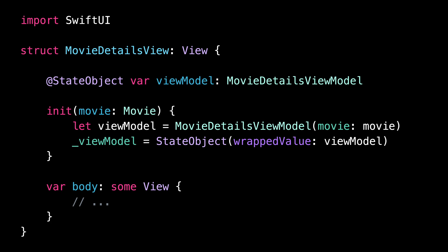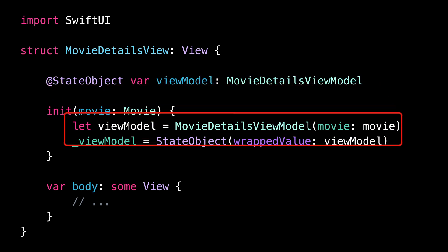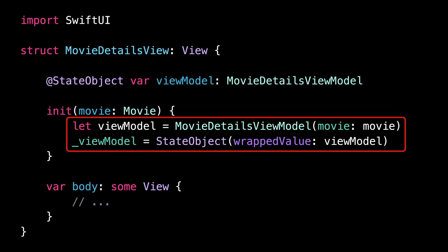Can you guess what's wrong with this code? We're using the property wrapper @StateObject to store a view model. But because the view model needs an argument to be initialized, we can't give it its initial value directly at its declaration. Instead, we have to do it in the initializer of the view.